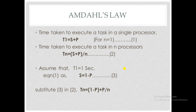Consider the serial part as S and the parallel part as P. The time taken to execute a task on a single processor is T1 equals S plus P — the sum of the serial and parallel parts. This is equation 1. The time taken to execute a task on n processors is Tn equals S plus P divided by n, where n is the number of processors. This is equation 2.